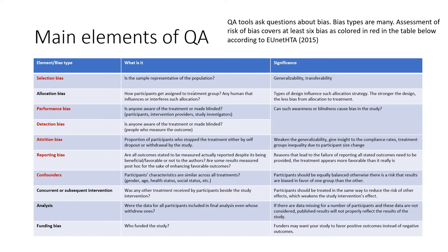QA tools often ask questions about bias, and there are many types of bias. Assessment of risk of bias covers at least six bias types, highlighted in red in the table on screen — you can pause the video to look at the details. I'm going to explain those six highlighted ones in detail, one by one.